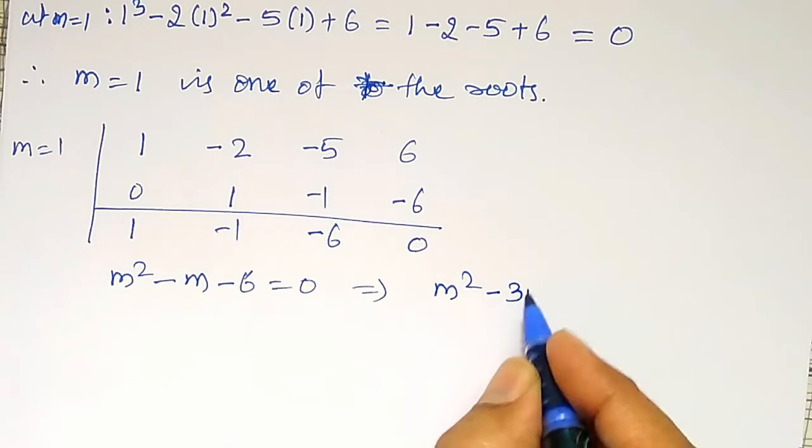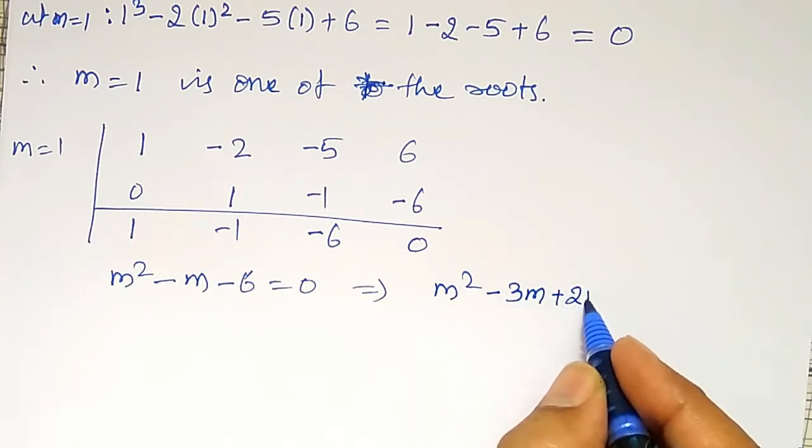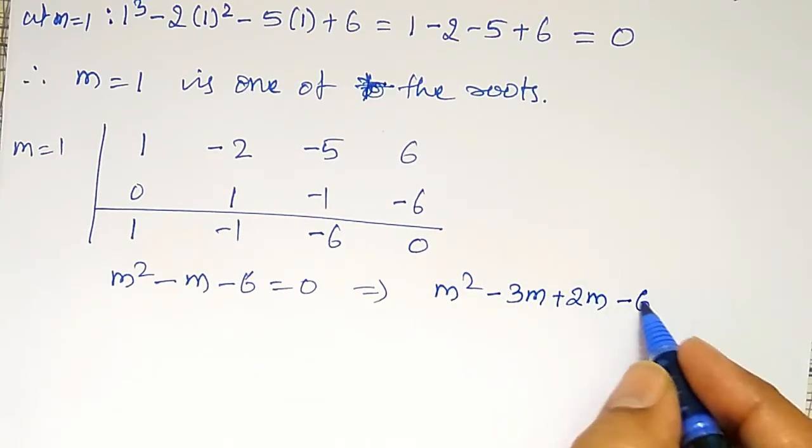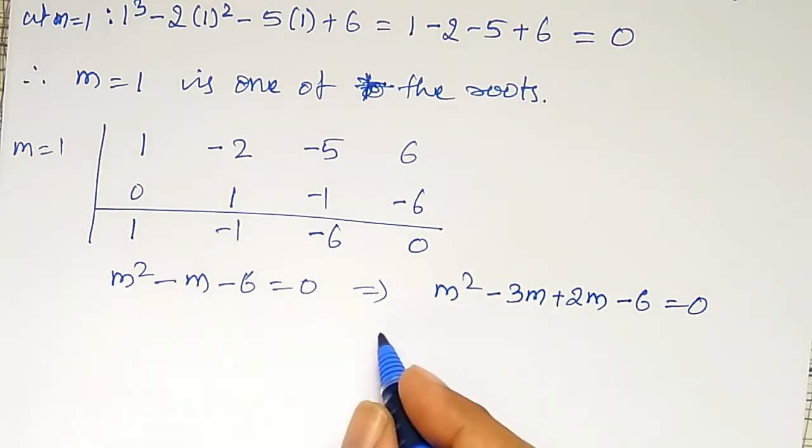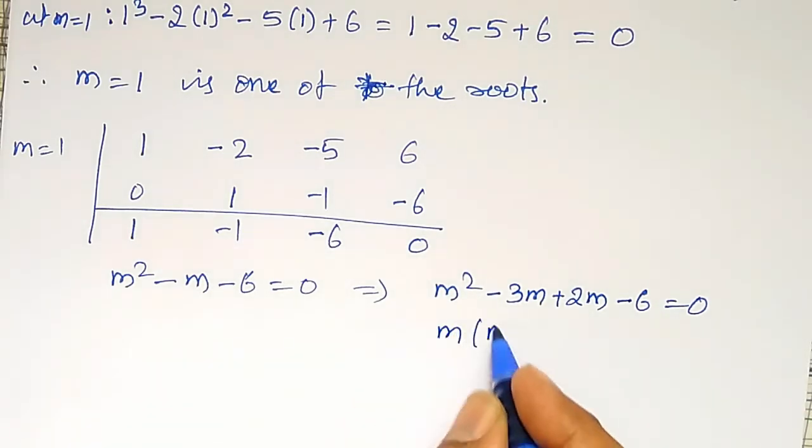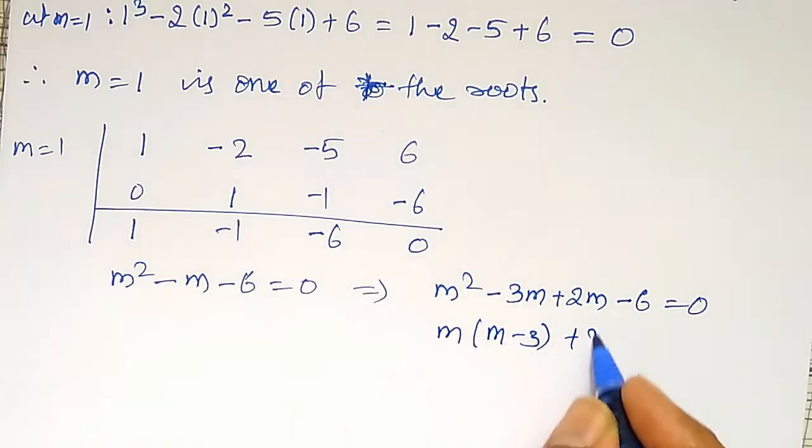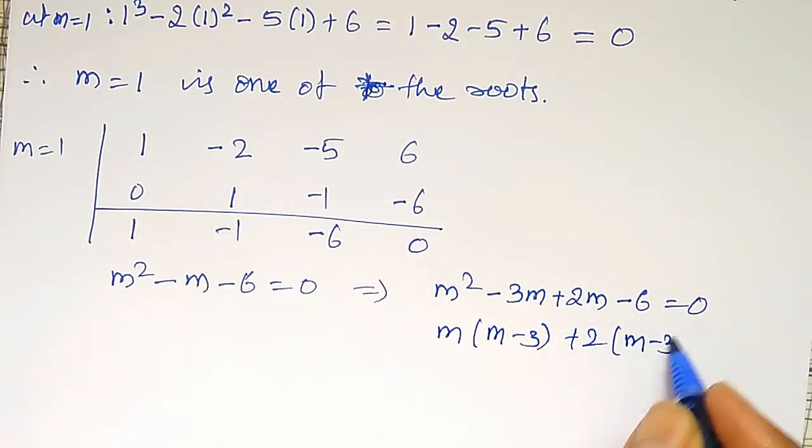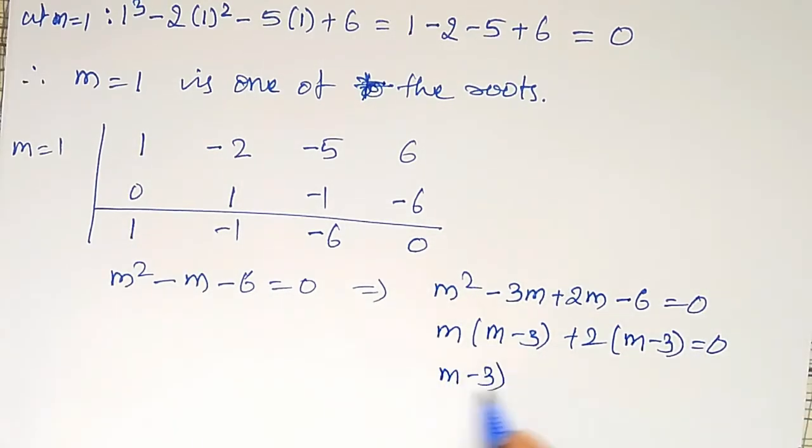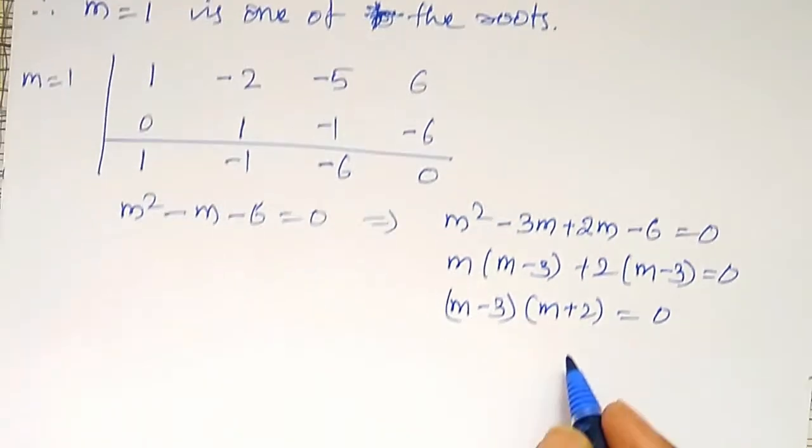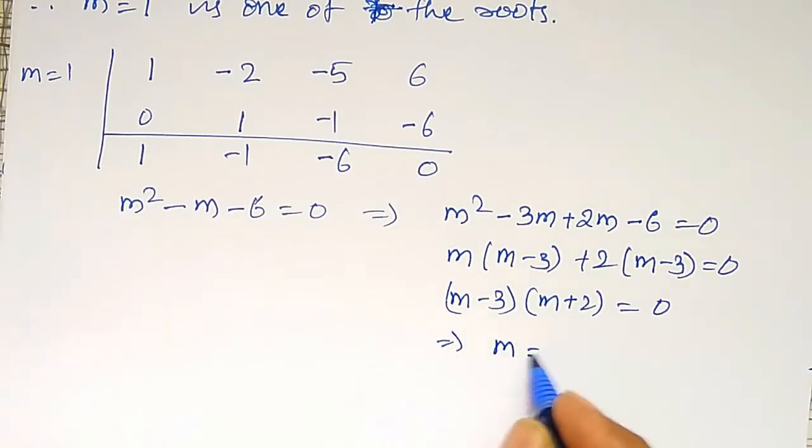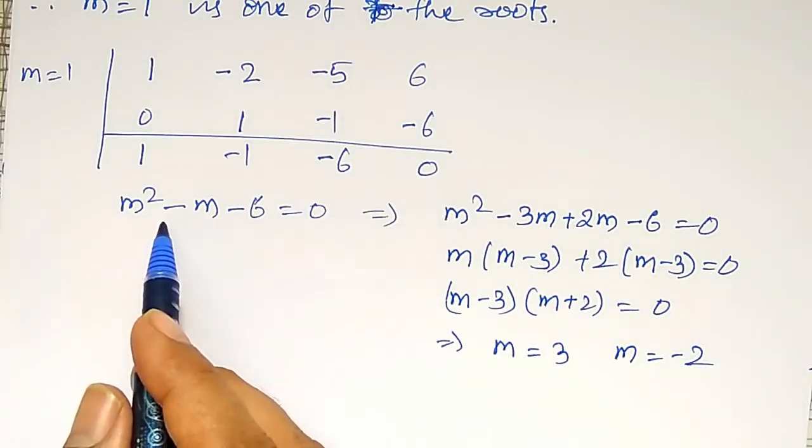That is, -3m + 2m - 6 equal to 0. That is, m(m - 3) + 2(m - 3) equal to 0. (m - 3)(m + 2). That implies, m equal to 3 and m equal to minus 2 are the two roots of this quadratic equation.